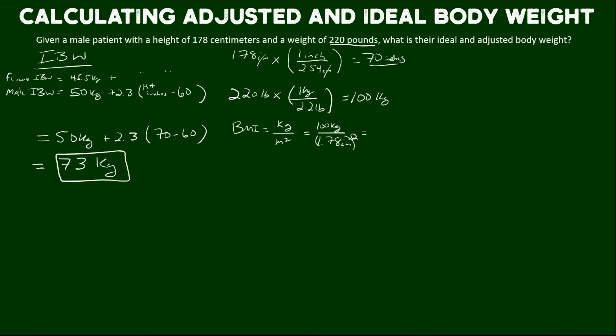And that gives us a BMI of 31.6 kilograms per meter squared. And if we compare that to the charts of BMI, which include 18 to 25 being normal weight, 25 to 30 being overweight, and greater than 30 being obese, we can tell this patient has a pretty high BMI in the obese range.